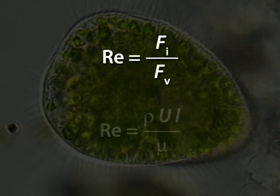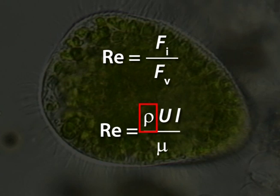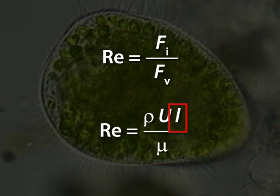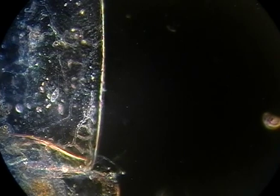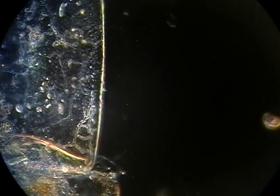Here's the Reynolds number in more detail. In the numerator is the product of the fluid density and its speed, which gives a measure of inertia, and the length of the body. In the denominator is the viscosity. Organisms use two types of motors in low Reynolds number environments: flagella and cilia.